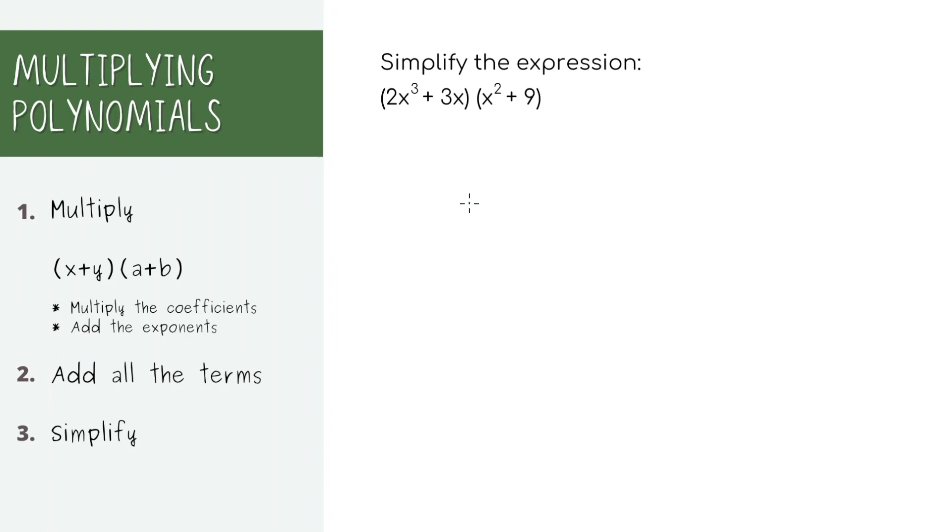Now, what happens if we add another term? You might have learned the FOIL method in Algebra 1, but it kind of confuses me even more. So I pretty much just think of it as an extension of distribution. We're going to start by doing the same thing. Take the first term here and multiply it by the first term here. Next, take that same first term and multiply it by the second term here.